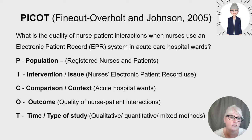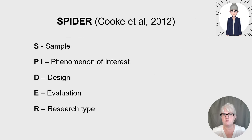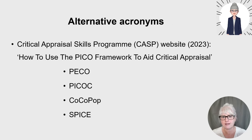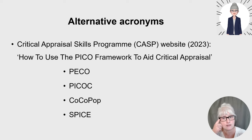We also have the SPIDER acronym, developed by Cooke et al. for qualitative research questions: S for Sample, P for Phenomenon of Interest (to understand the how and why of behaviours, decisions, and experiences), I for Design, E for Evaluation (which might include attitudes, perceptions, or experiences), and R for Research type. Have a play around with the different acronyms to find which works for you. If the standard acronyms don't work, there are alternatives such as COCO, POP, or SPICE, and the CASP website has guides with example questions.